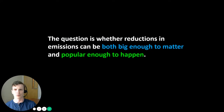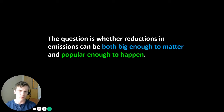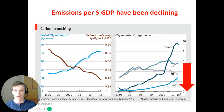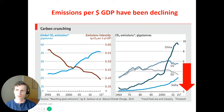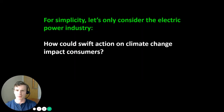The picture is different depending on where you are. The question everywhere — not just in China and India, but also in the United States and Europe — is whether future reductions in emissions can be both big enough to matter, to do something meaningful about climate change, but also popular enough to happen. Are they politically going to be feasible? Because the reality is that the emissions reductions we've experienced in the United States and Europe are really a fraction of the reductions that are truly needed to do something meaningful about climate change.